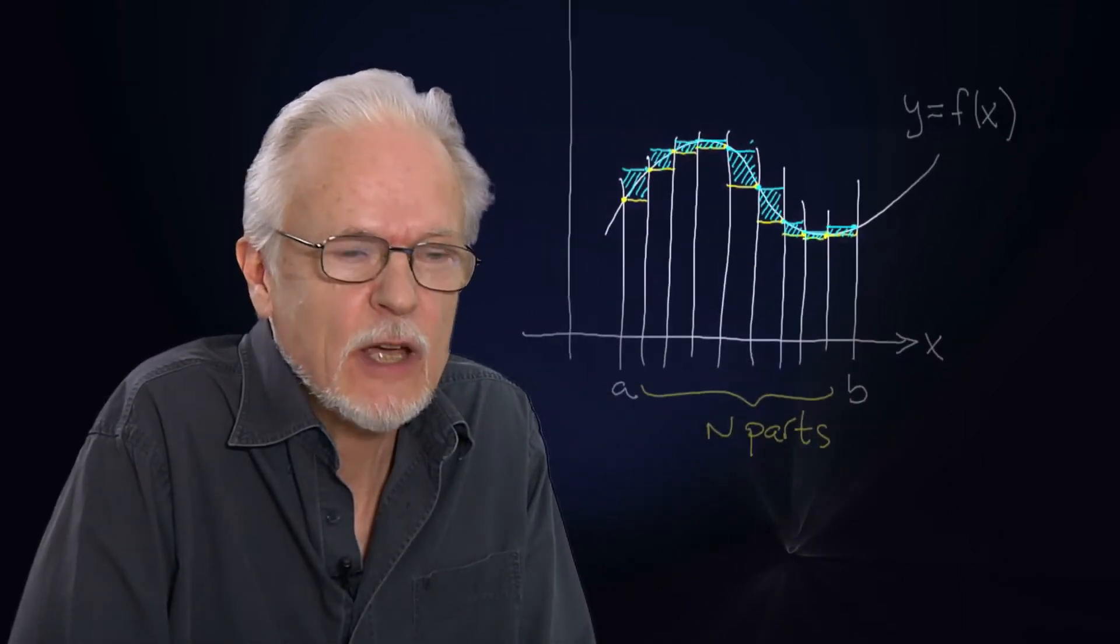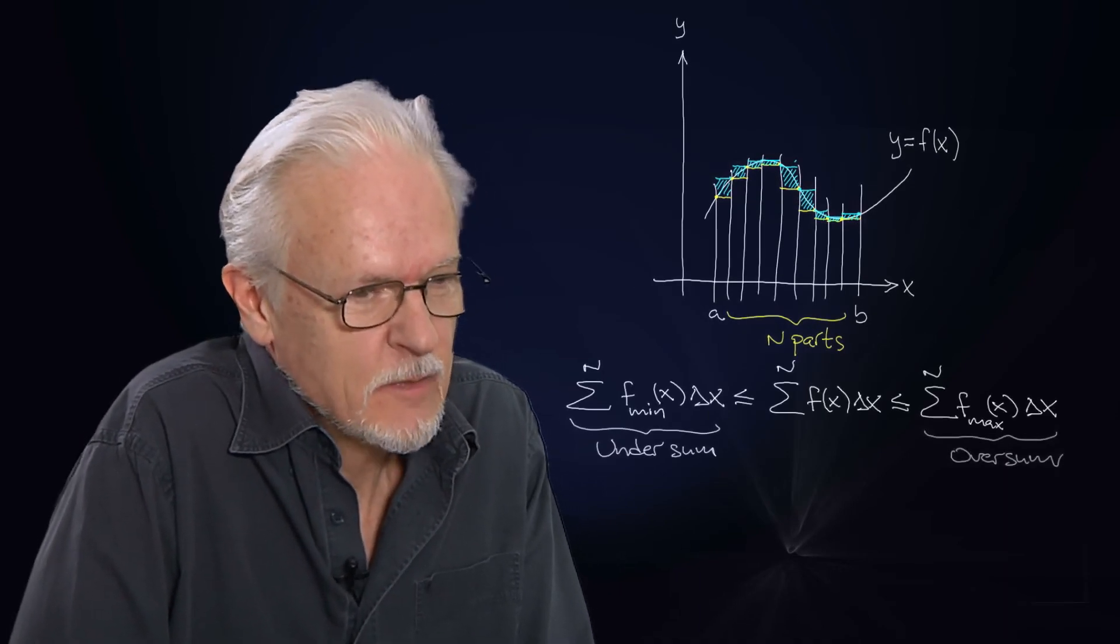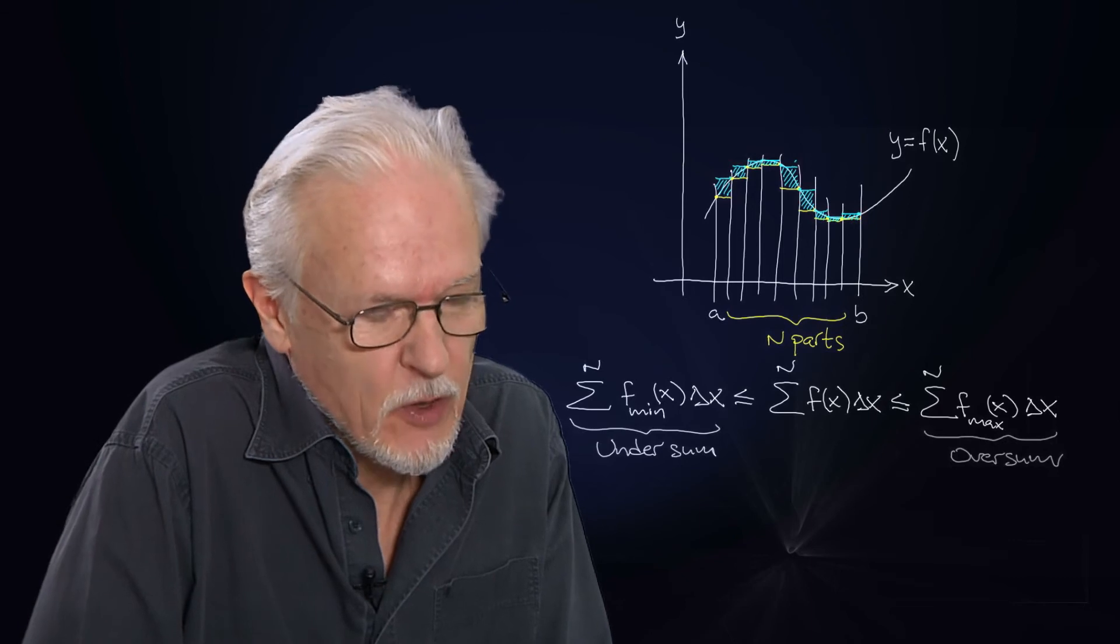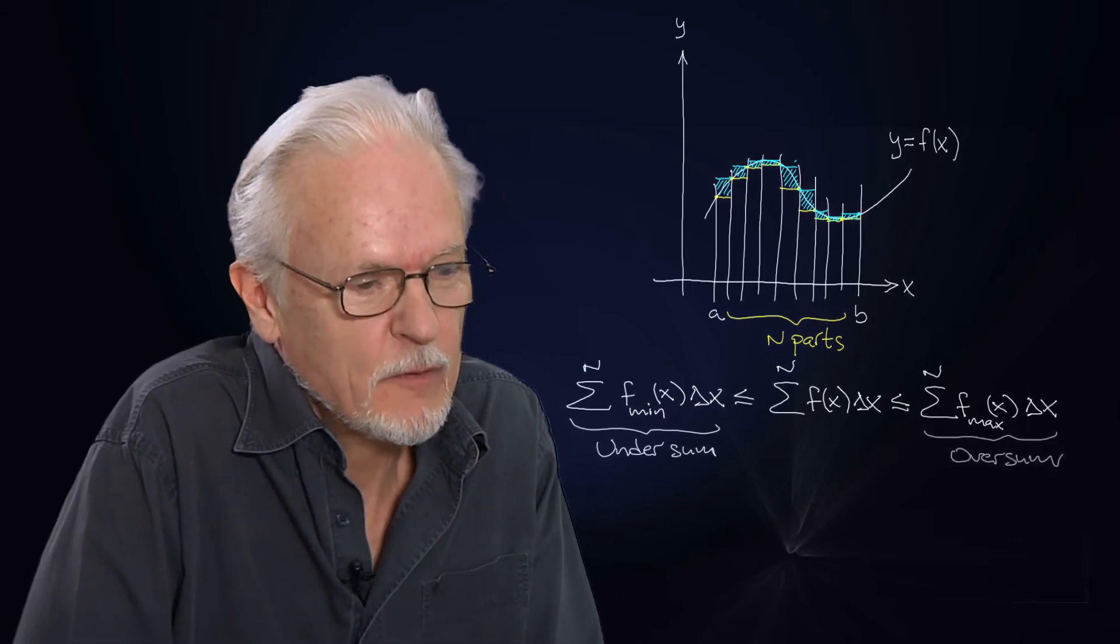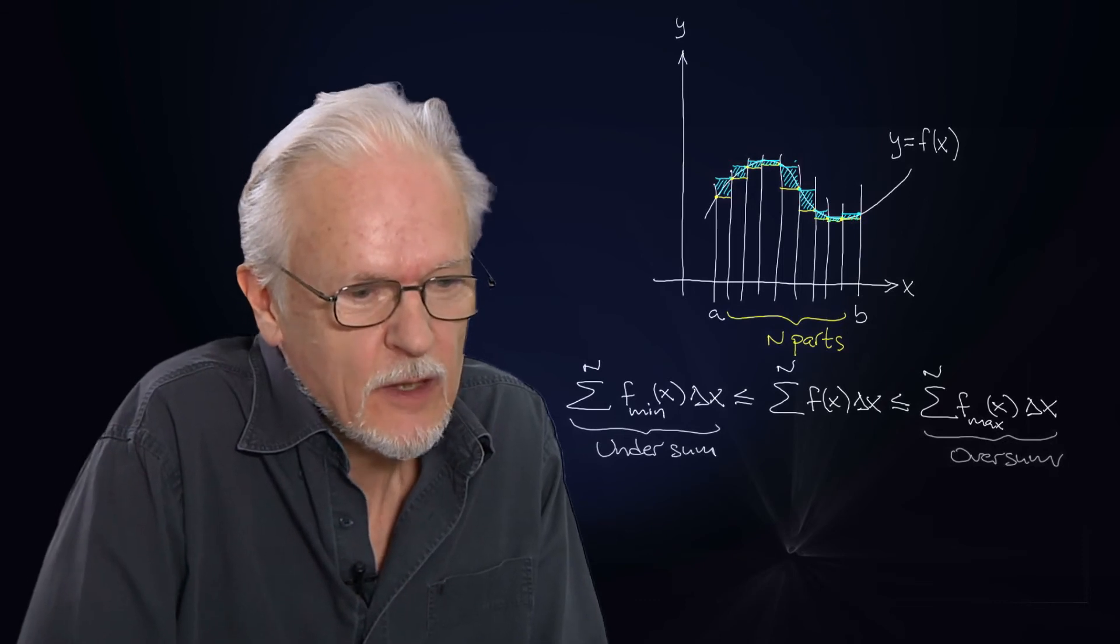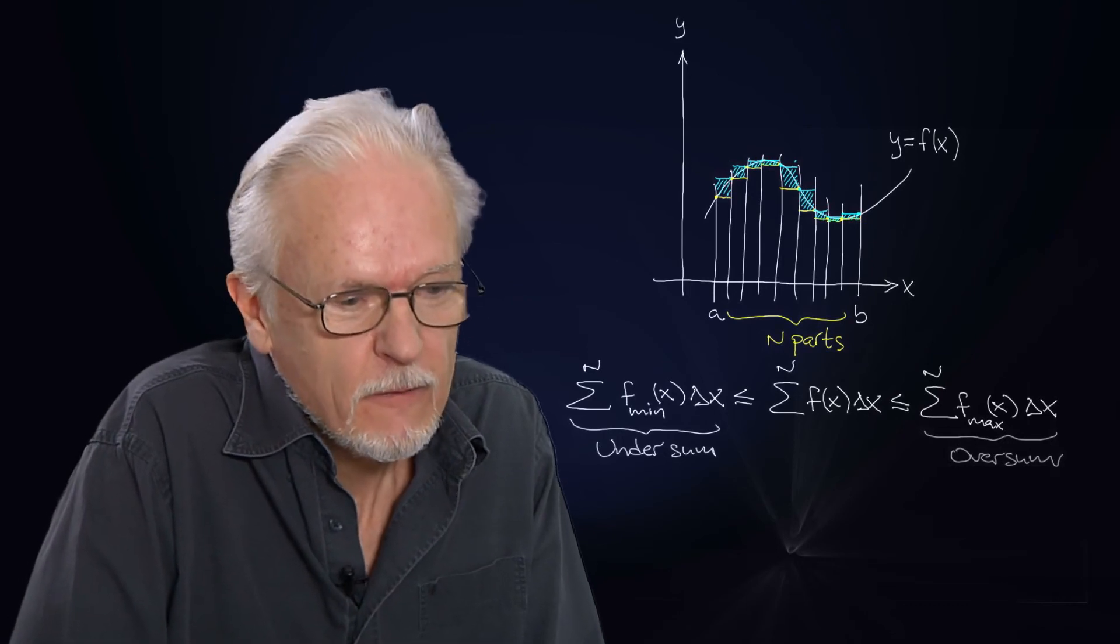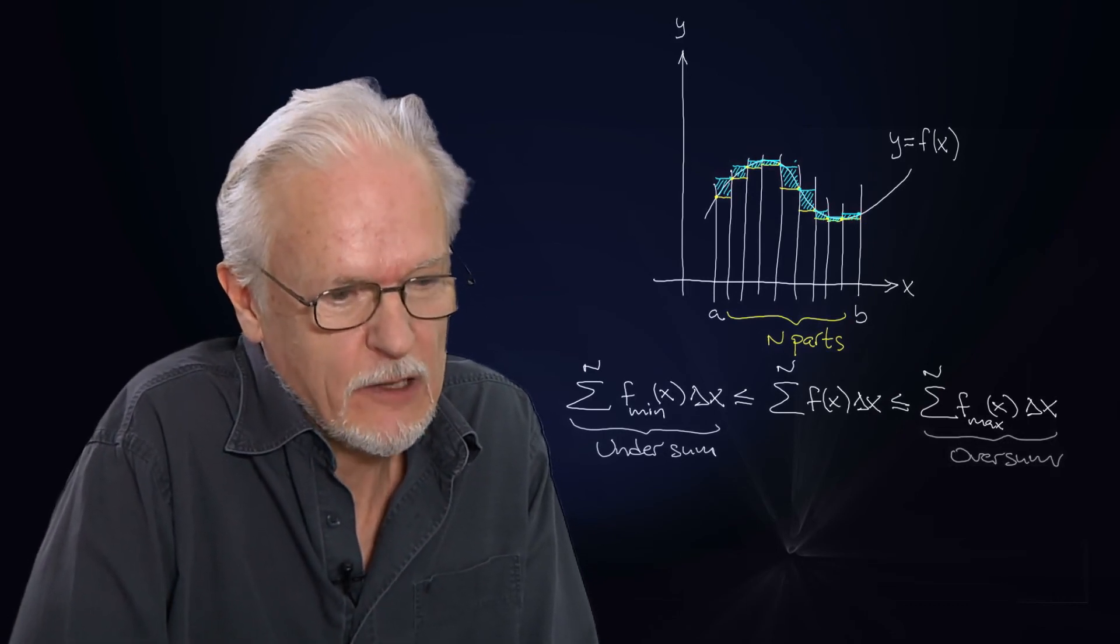That is what we see here: f_min times delta x, sum to n parts, and n is the number of intervals we are working with. And the max, the oversum, is the same thing with the maximum value.